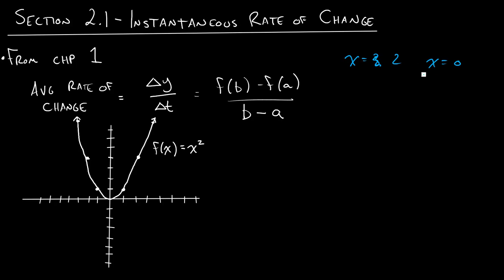If we plug this into our average rate of change formula, we can see that we'll end up with 4 minus 0 over 2 minus 0, and we'll end up with this answer of 2.